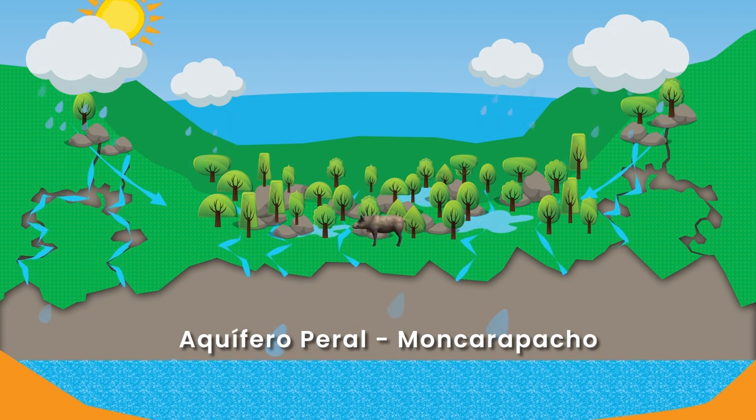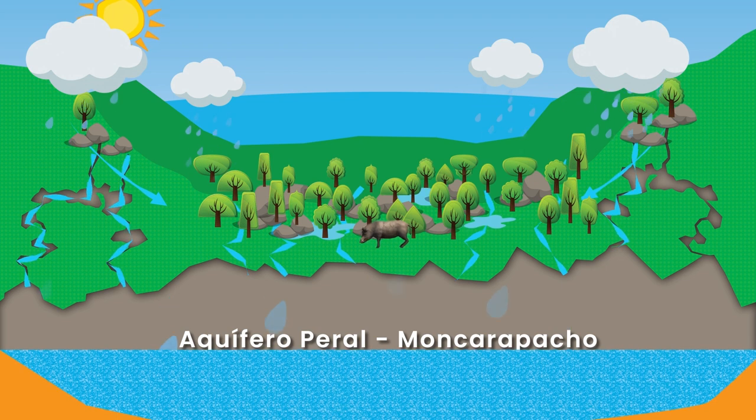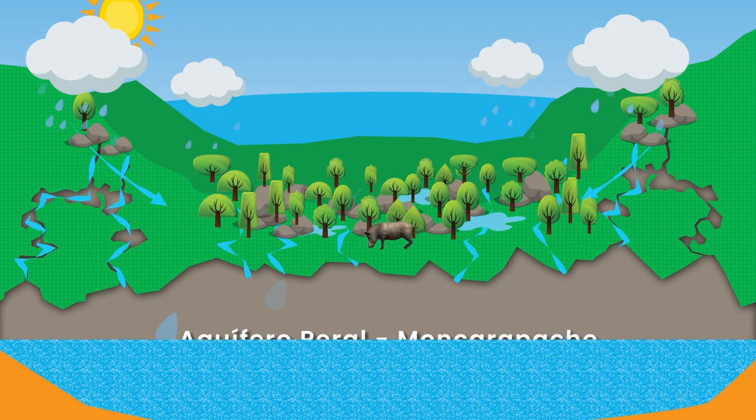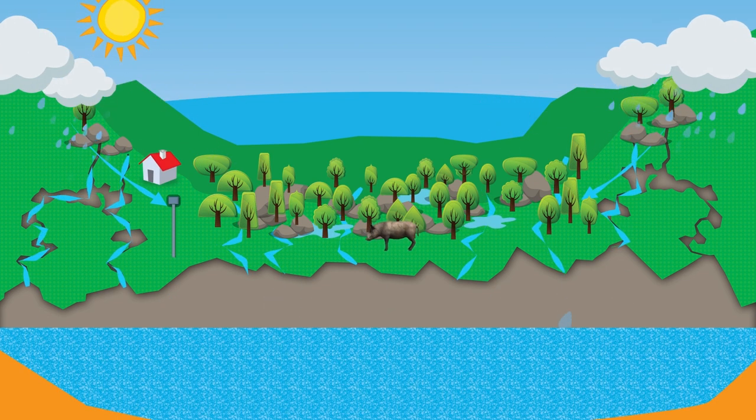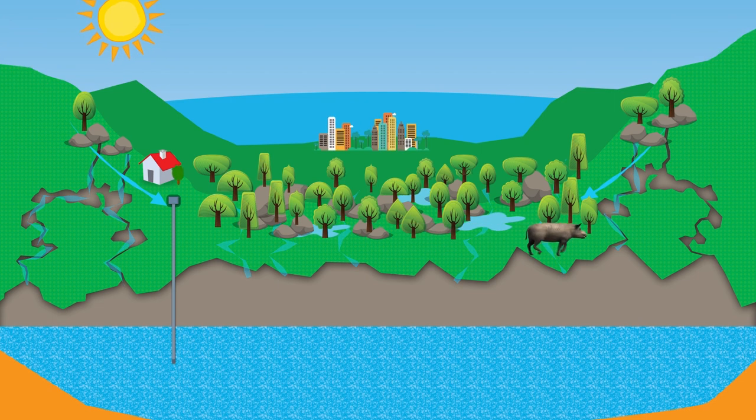This wide area of land collects rainwater from the surrounding hills, and through the process of infiltration, it refills the Peral Moncarapashu aquifer beneath.